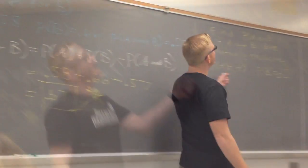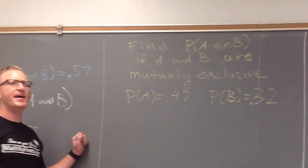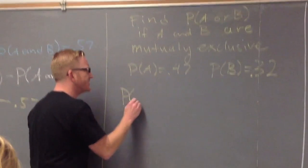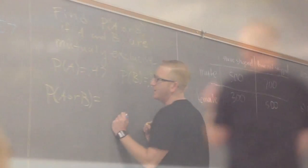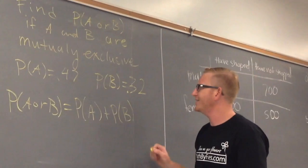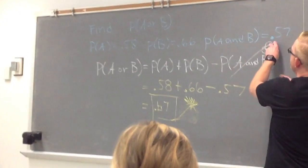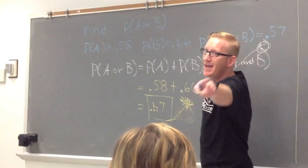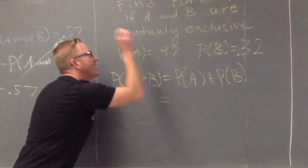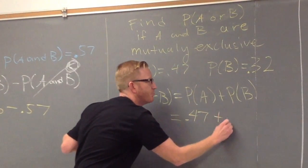I want to see another one — this one over here. What happens if A and B are mutually exclusive? Then we use this: the probability of A or B is going to be the probability of A plus the probability of B. Why? Well, if you're looking for A or B and they're mutually exclusive, the probability of the intersection happening is zero. So all we need to do is plug them in — this is going to be 0.47 plus 0.32.